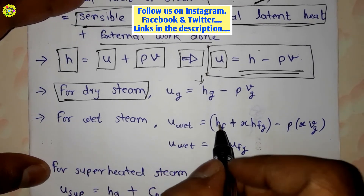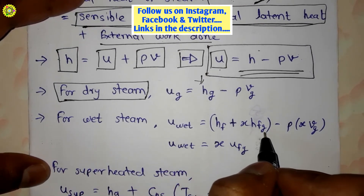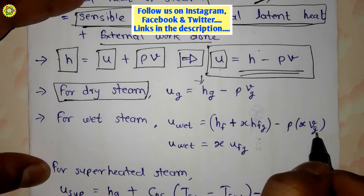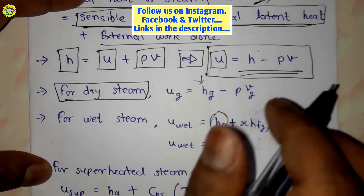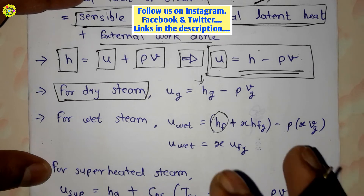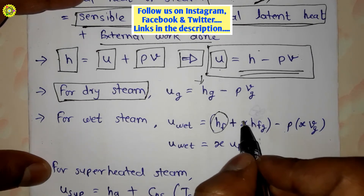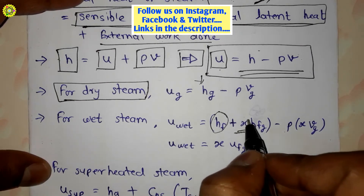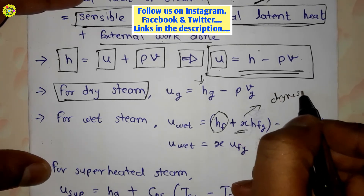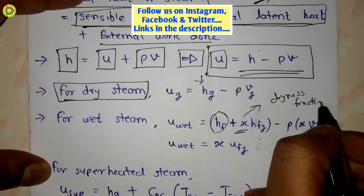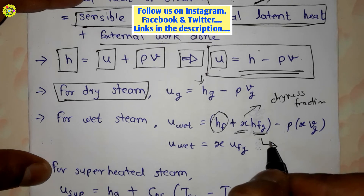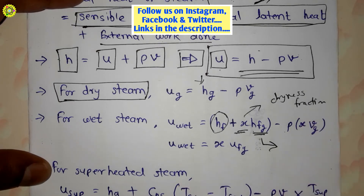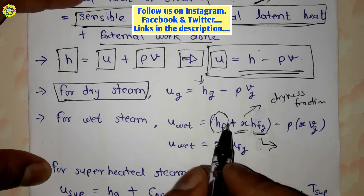For wet steam, u_wet = h_f + x·h_fg − p·(x·v_g), where h_f is the sensible heat or enthalpy of saturated water, x is the dryness fraction, and h_fg is the enthalpy of vaporization, also called latent heat of vaporization.